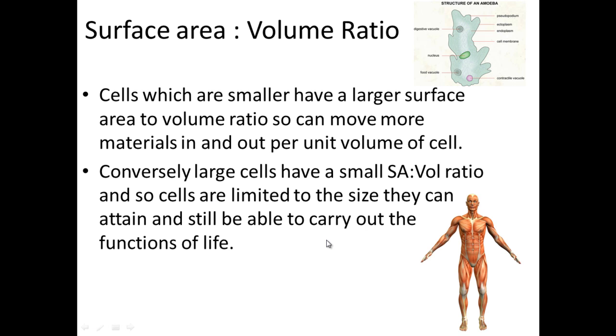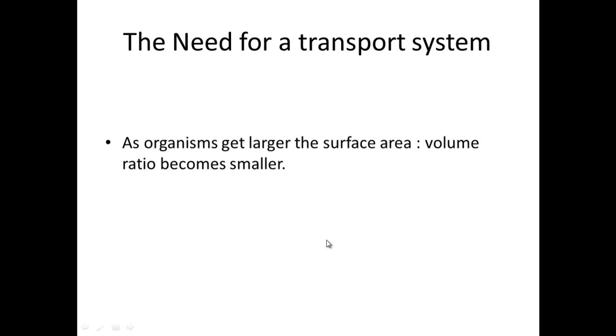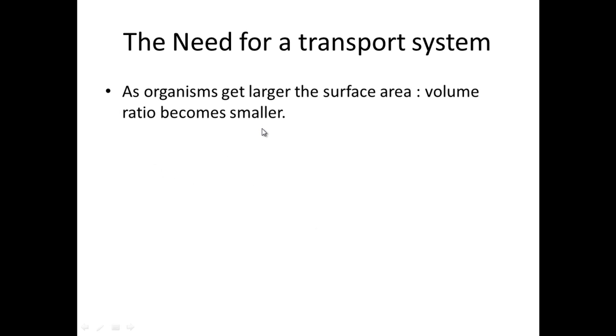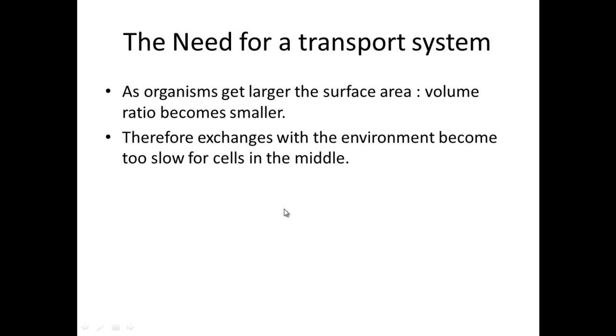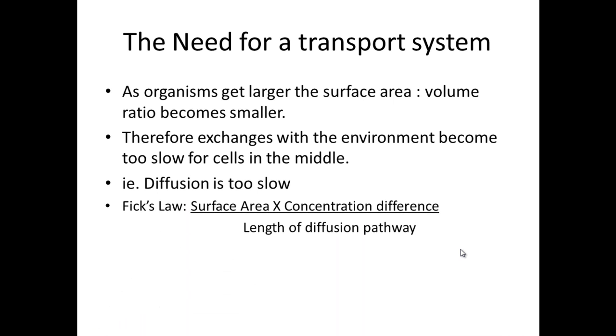So to summarise the first part, you can see that as organisms get larger, the surface area to volume ratio becomes smaller. Therefore, the exchanges with the environment become too slow. And we can use the calculation or we can use Fick's law to actually calculate the rate at which diffusion occurs.